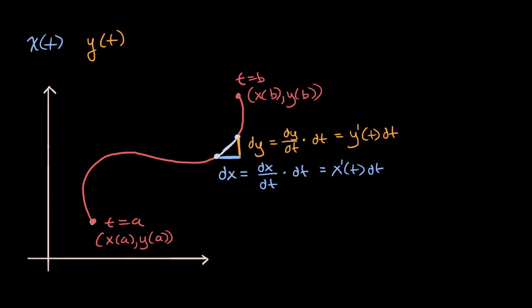Now, based on this, what would be the length of our infinitesimally small arc length right over here? Well, that, we could just use the Pythagorean theorem. That is going to be the square root of, that's the hypotenuse of this right triangle right over here. So it's going to be the square root of this squared plus this squared, so it is the square root of, I'm going to give myself a little bit more space here because I think I'm going to use a lot of it.